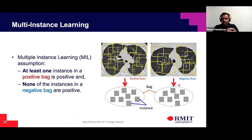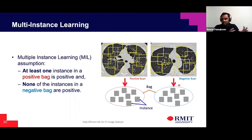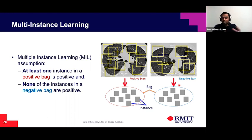Even within the St. Vincent's dataset, we looked at performance across different CT machines used at that hospital. It seems that the model is generalizing reasonably well across those different machines, which is an encouraging early sign.